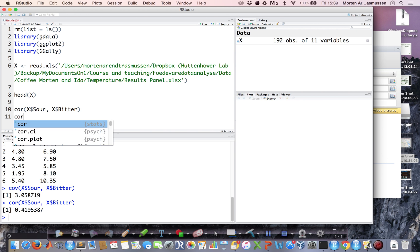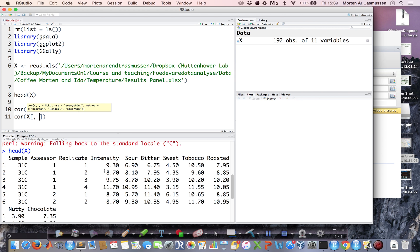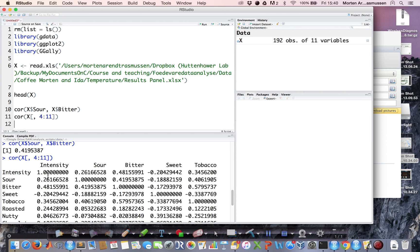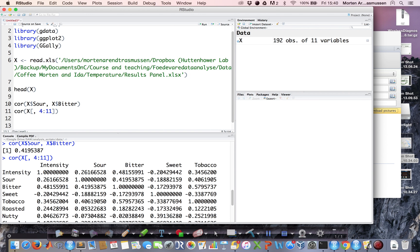Another neat way is to use the command on a range of the data. Here I would like to see the correlation between all the response variables from intensity, column 4, up to chocolate, column 11. What you'll see is you get a diagonal which is 1, because the correlation between a variable and itself is 1. Outside the diagonal, you have symmetric entities. The correlation between intensity and sour is the same as between sour and intensity. It's very easy to get these numbers in R.